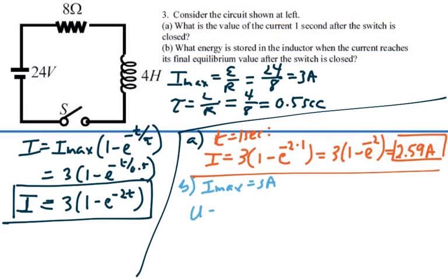And hence our energy stored, which is 1 half the inductance times the current at any time squared. It's going to be 1 half times 4 times 3 amps squared, which would be 2 times 9 or 18 joules. So the energy stored when we are at maximum current is 18 joules.